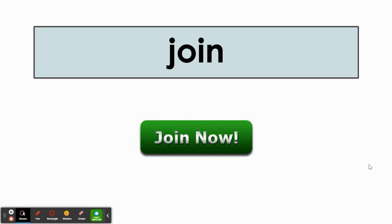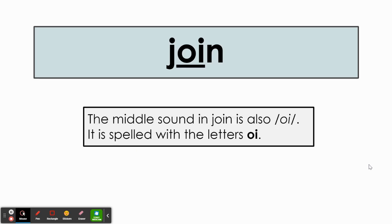Let's practice a few words that have the o-y sound in them. Here's our first word. Join. J-o-y-n. Join. The middle sound in join is also o-y. It is spelled with the letters o-i. O-y.